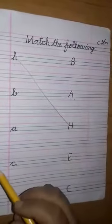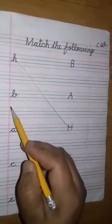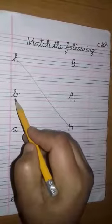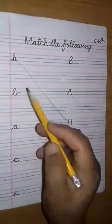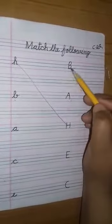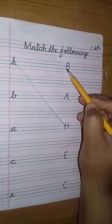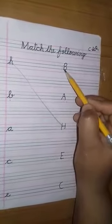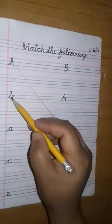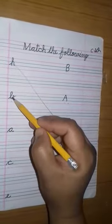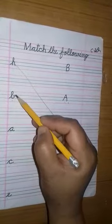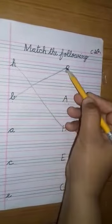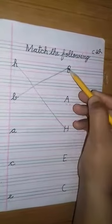Again, this is cursive B. So we have to match with capital B. So again we will go to this column. This is capital B. Yes, this is capital B. So draw a line to match this letter. Cursive B to capital B. B says B.